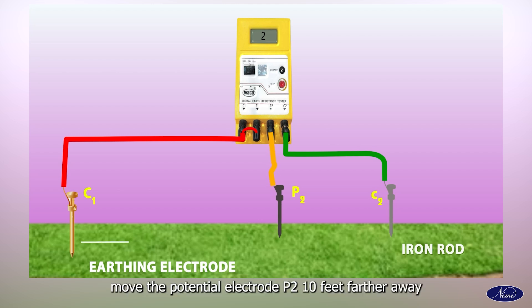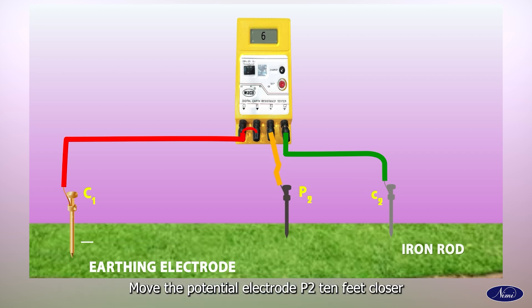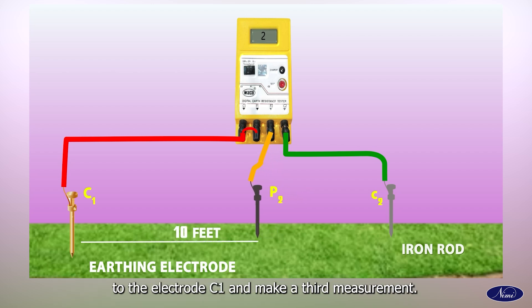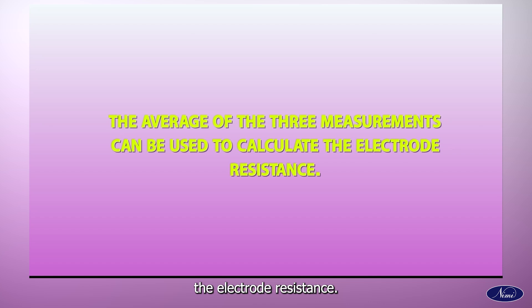Move the potential electrode P2 10 feet farther away from the electrode C1 and make a second measurement. Move the potential electrode P2 10 feet closer to the electrode C1 and make a third measurement. The average of the three measurements can be used to calculate the electrode resistance.